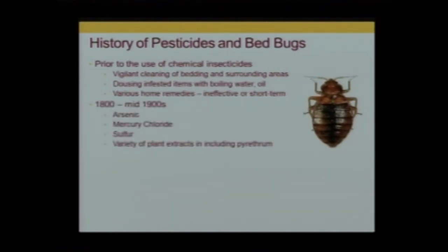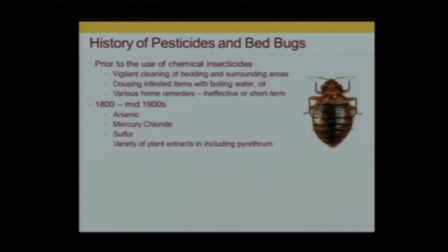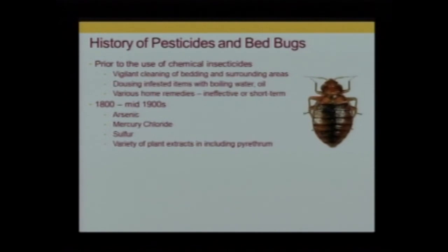Then came the advent of some of these chemicals. Back then, people didn't care too much about the environment or people's health — they just wanted to get rid of pests. So they used materials just as toxic to humans as to insects: things like arsenic, mercury, sulfur, and a variety of plant extracts. Some of the most toxic materials on earth are natural — arsenic is natural. Boric acid is a mineral and very safe, but it doesn't work on bedbugs. There are different formulations and different active ingredients.